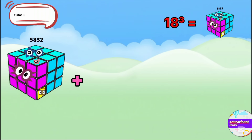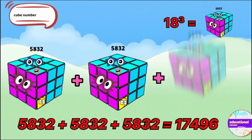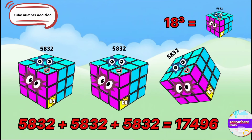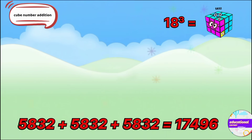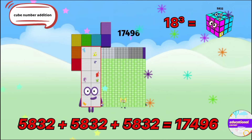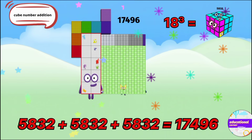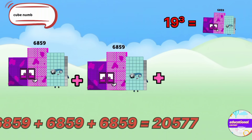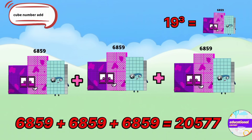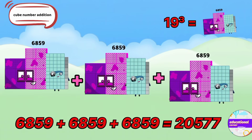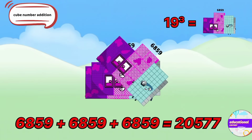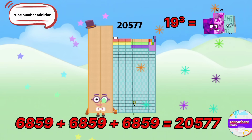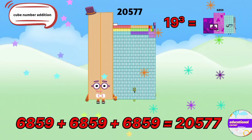The cube of 18 is 5832. If we add it three times, the answer is 17496. The cube of 19 is 6859. If we add 6859 three times, the answer is 20577.